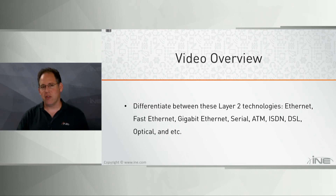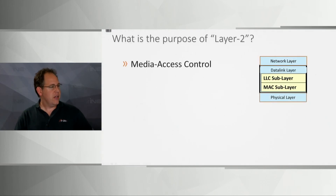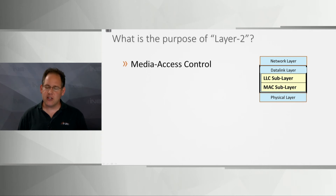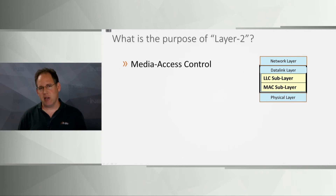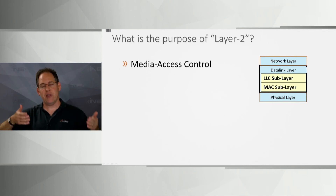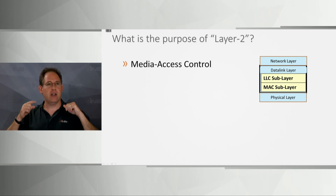Layer 2 is called the data link layer. The data link layer is actually subdividable into two sub-layers: the LLC sub-layer, which stands for Logical Link Control, and the MAC sub-layer. Layer 1 defines the cable and how ones and zeros will be physically represented — via laser light, electricity, or radio frequencies.